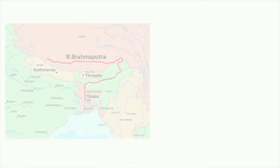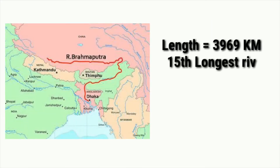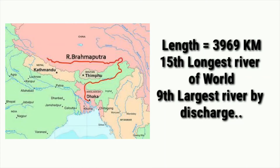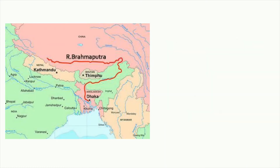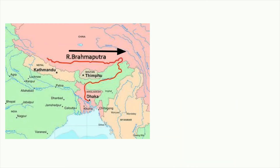Now let's see some facts about the Brahmaputra river. The Brahmaputra river, with a length of 3,969 km, is the 15th longest and 9th largest river by discharge in the world. It originates near the Manasarovar lake in the Tibet region of China and flows in the east direction through several gorges, then takes a turn near the Namcha Barwa peak and starts moving in a south-south-westerly direction.